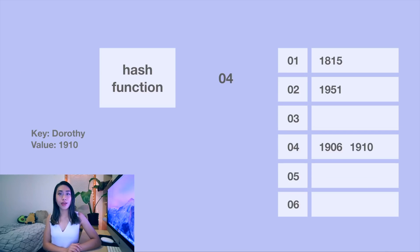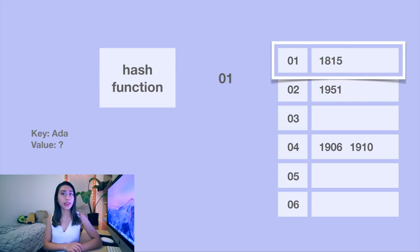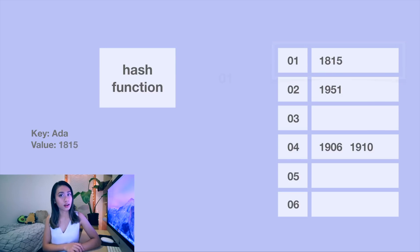To retrieve an item from the hash table, we take a key, run it through that same hash function, and then directly access that bucket in the array where the value is stored. This is a huge advantage of the hash table — there's no traversing a list. It's direct access no matter how large the hash table gets, making it a very efficient way to look up entries and add them.